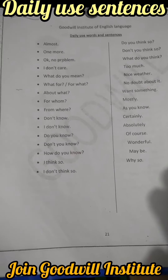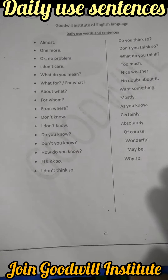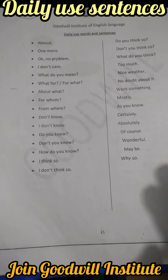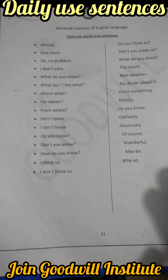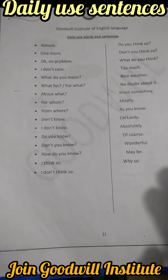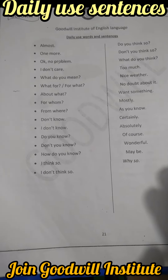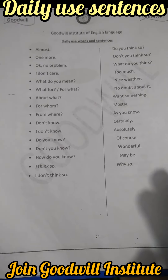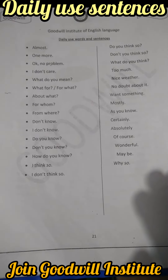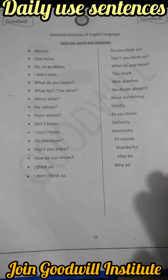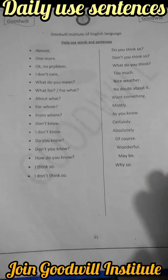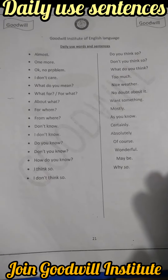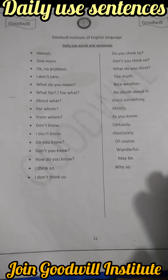How do you know? Tumhe kaisa pata? I think so. Mujhe aisa lagta hai. I don't think so. Mujhe aisa nahi lagta hai. Do you think so? Kya tumhe aisa lagta hai? Don't you think so? Kya tumhe aisa nahi lagta hai? What do you think? Tumhe kya lagta hai?